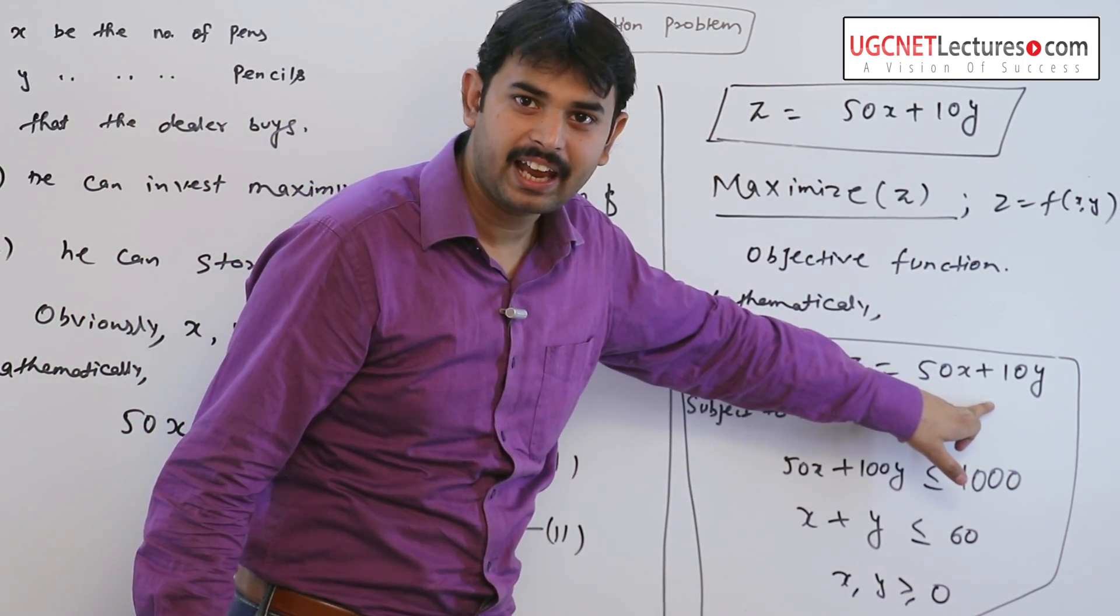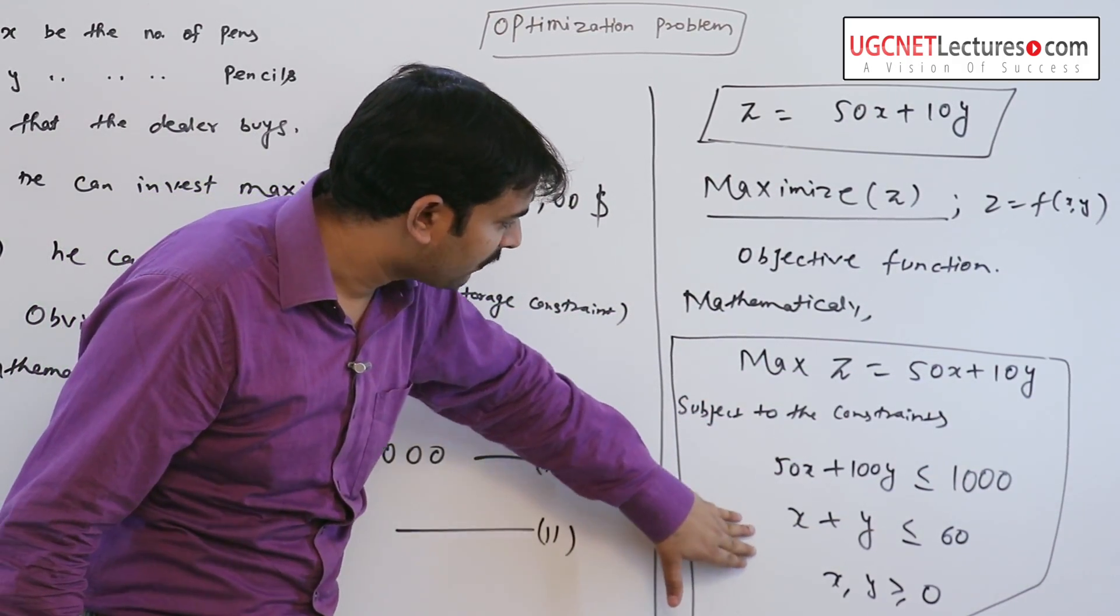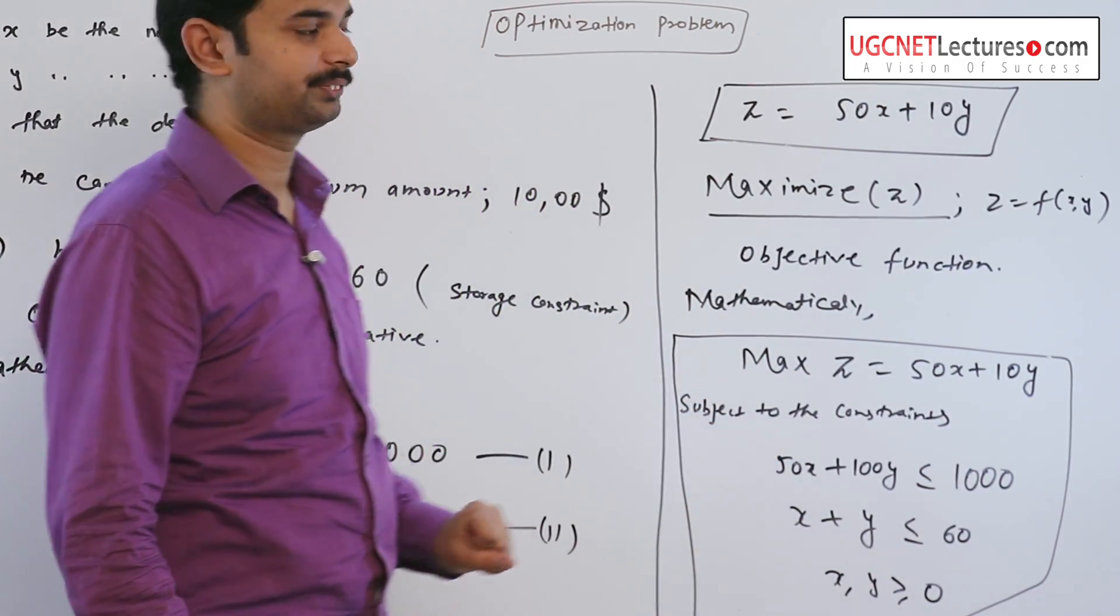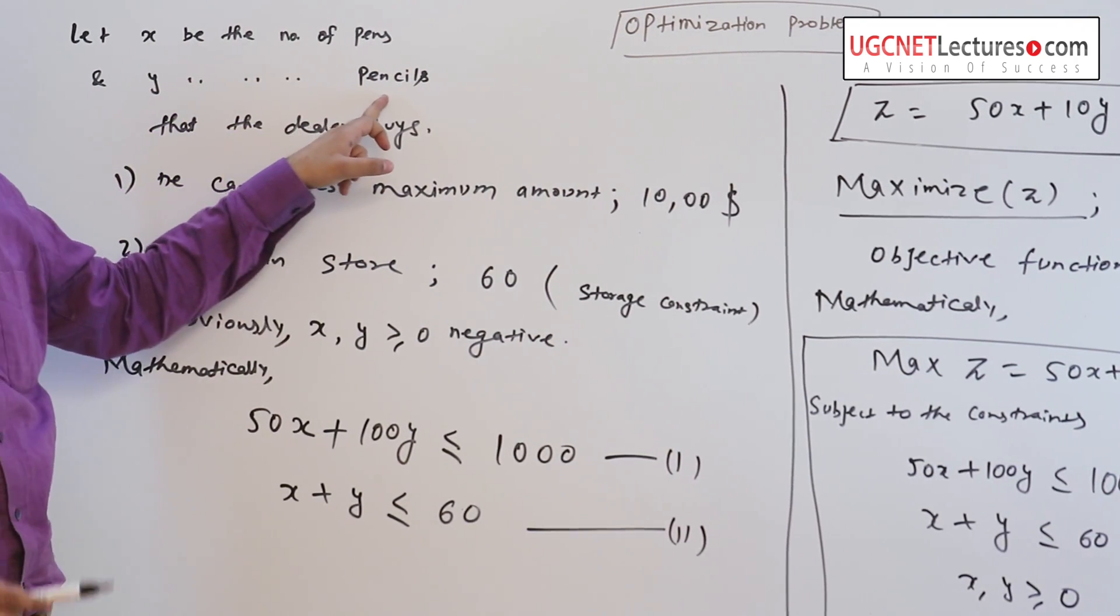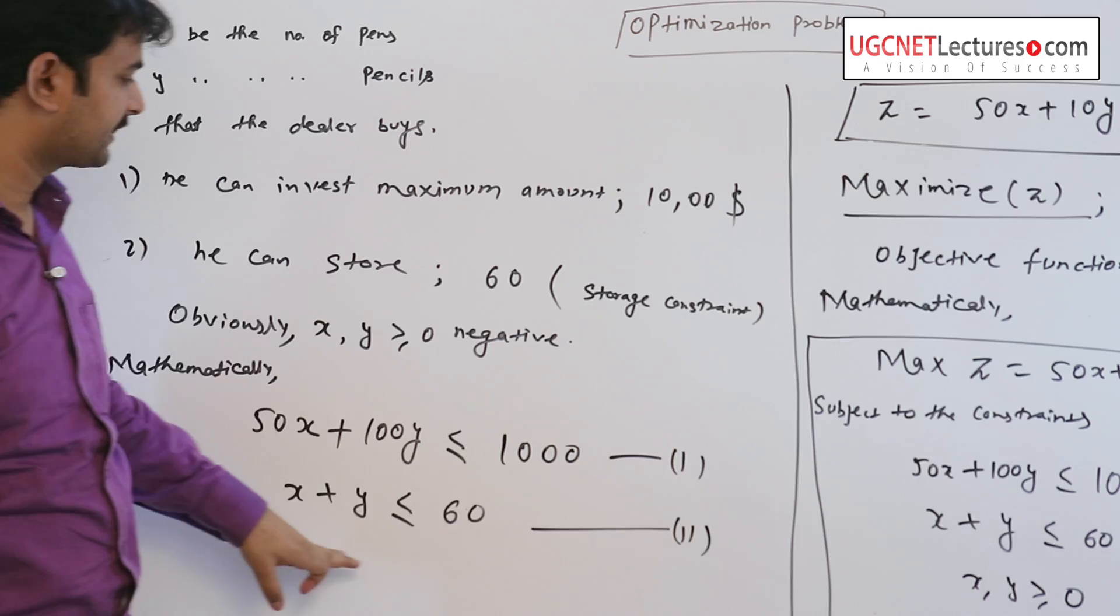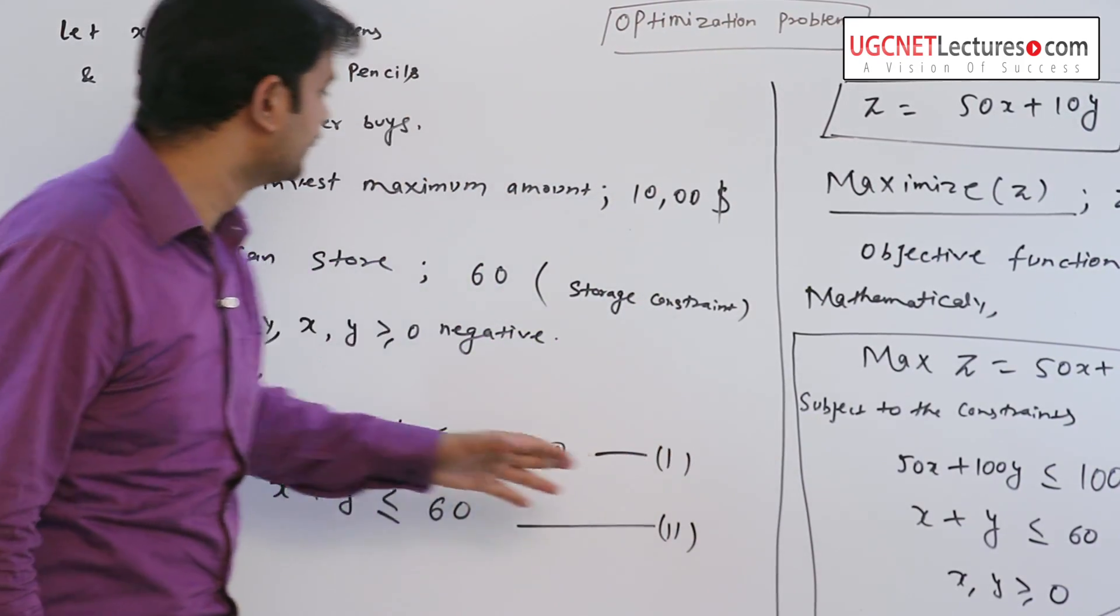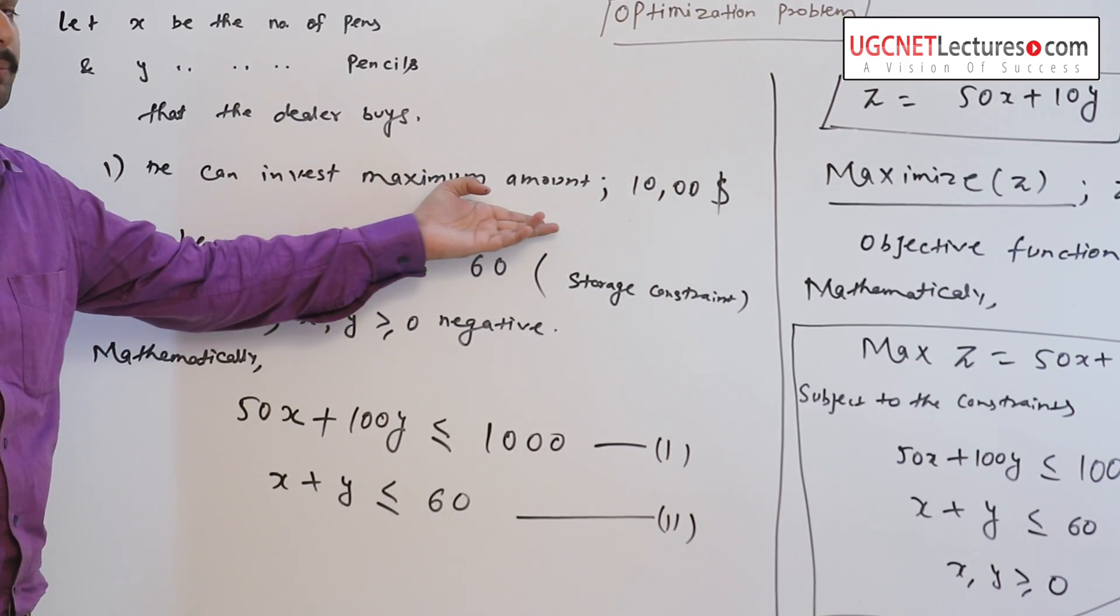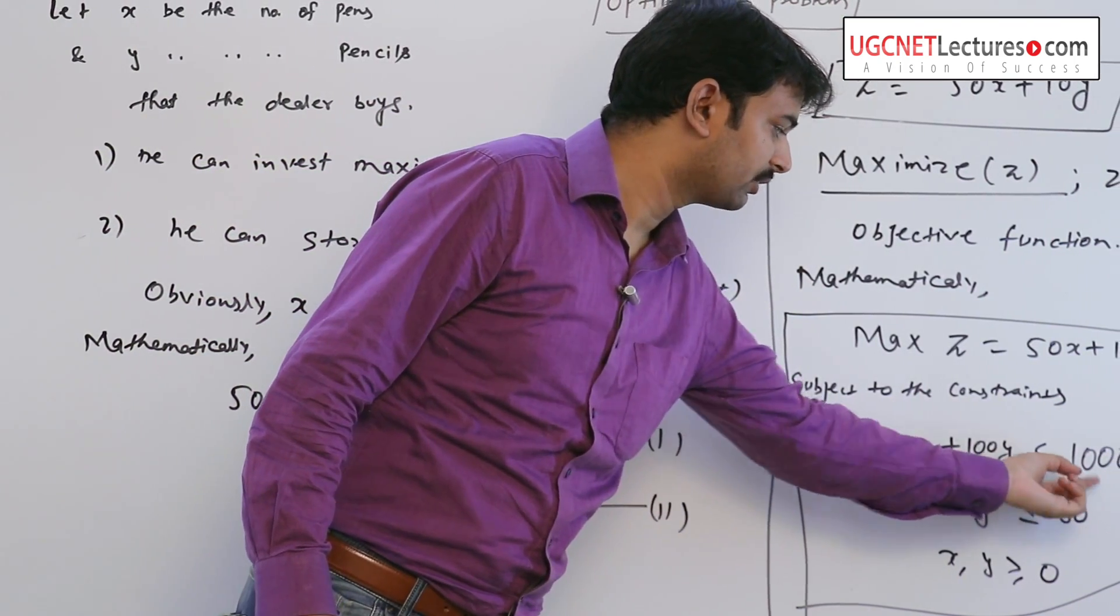Thus a linear programming is one that is concerned with the optimization of a function which is linear in x and y in such a way subject to the following constraints. Here x and y are the number of pens and pencils, so obviously x and y are non-negative.